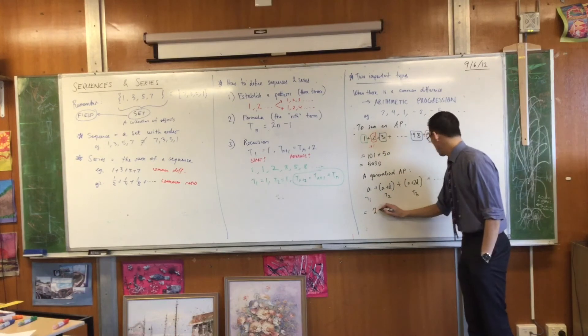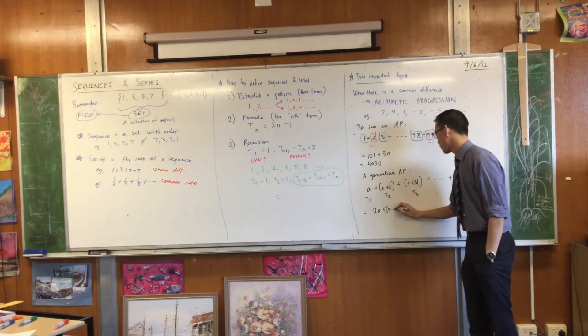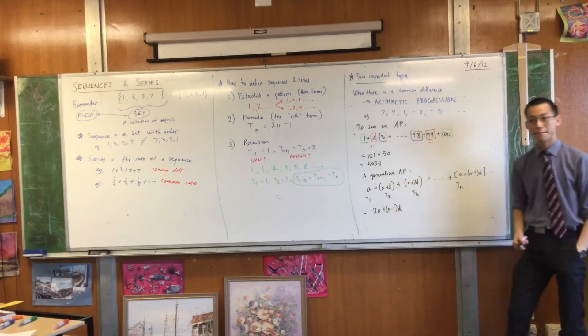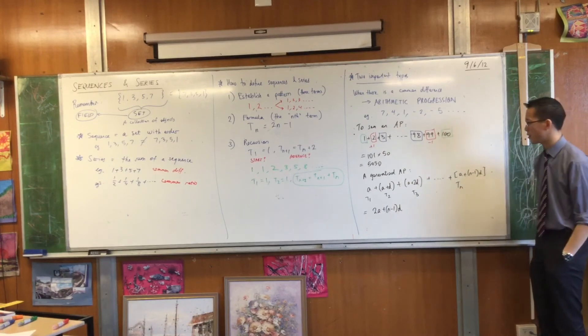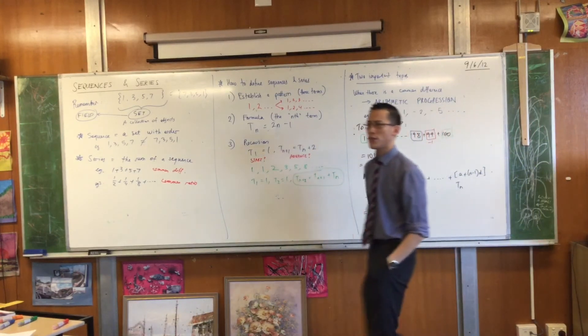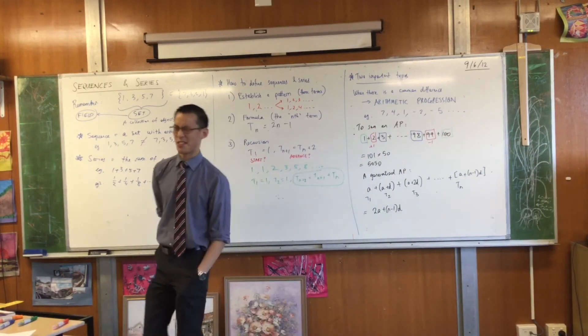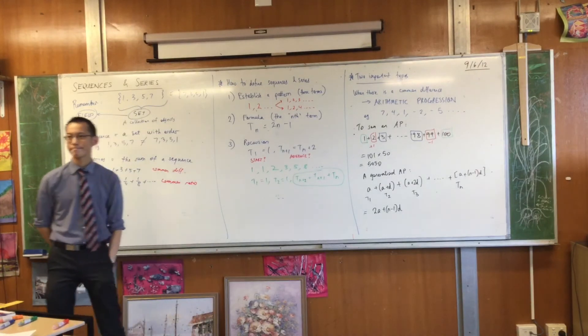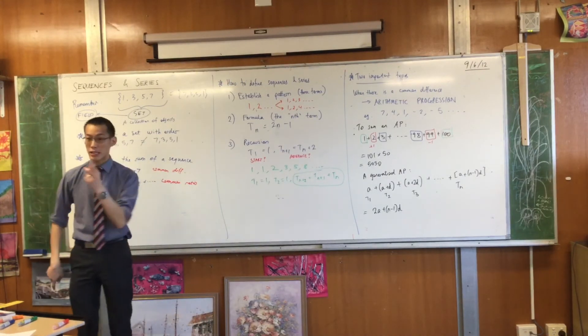So, I can simplify that. That's 2a plus n minus 1d, like that. Okay? That's the sum of the first and last terms. Then I had 50. Where did 50 come from? What's the significance of 50? What's the last term divided by 2? Okay. So, I could say it's the last term divided by 2.